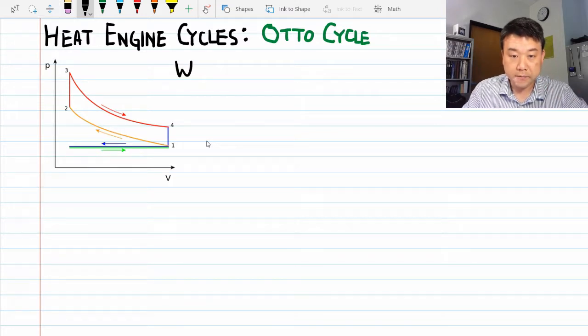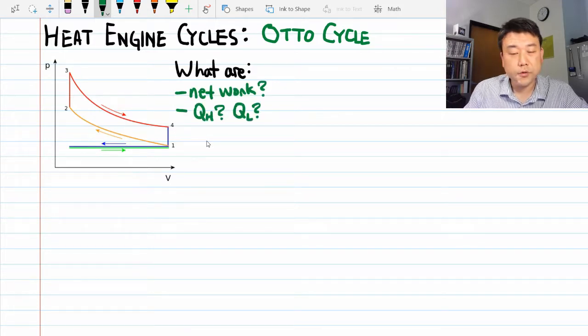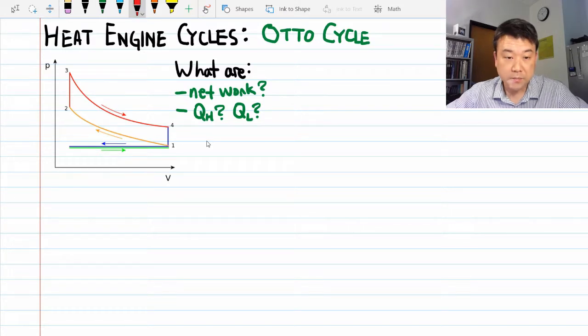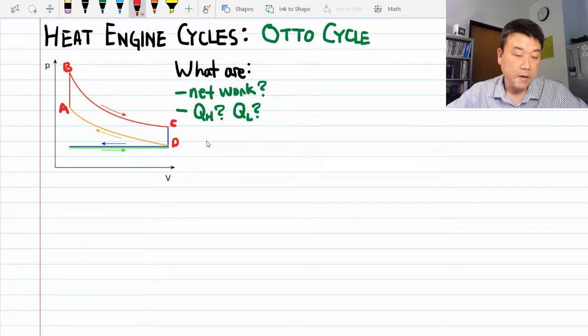So we are asking the same questions as before. That is, what are the network done and the heat transfers? The result for the auto cycle will be a little bit more complicated, so I'll try to go through this quickly. Let me start by relabeling some of these points. I am going to call this A, my starting point, B, C, D.